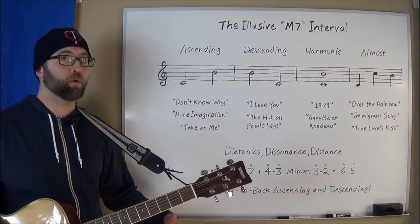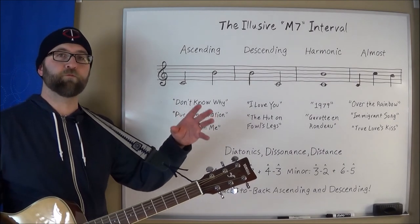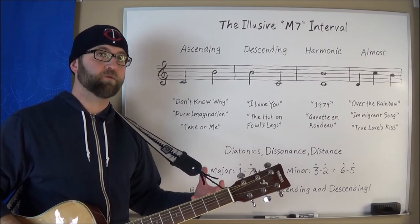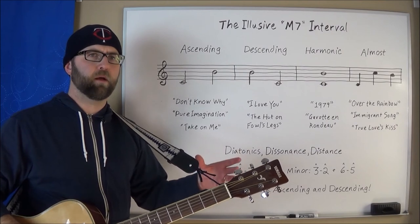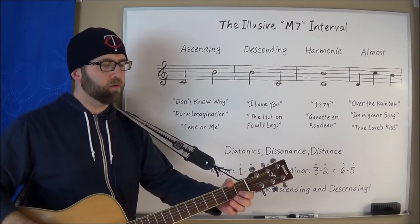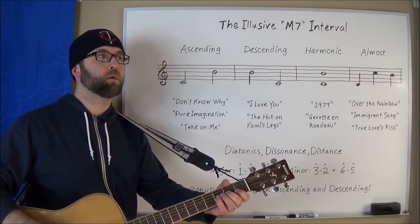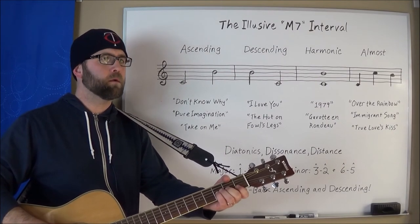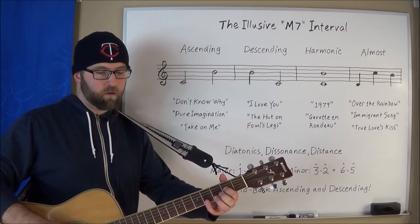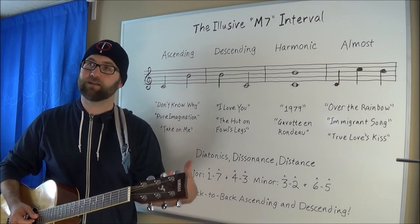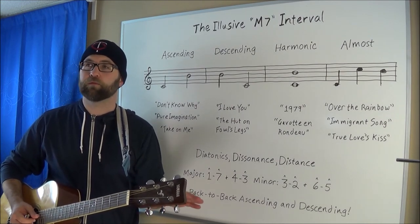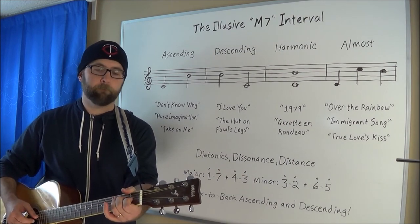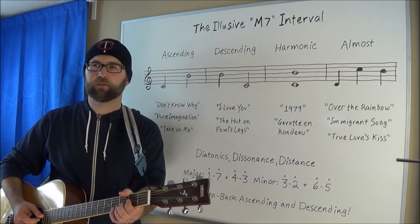Thanks for sticking around, because now we've got the bonus round: a few spots where we have back-to-back major seventh intervals. First, we have ascending to descending, found in one of the themes from E.T. the Extra-Terrestrial — I think it's when the boys bust E.T. out and they're outrunning the feds on their BMX bikes. Then it changes keys. Next we have it the opposite way, descending to ascending, found in that very same Bach example from before, just a few bars later. It just slips in there, real slick.